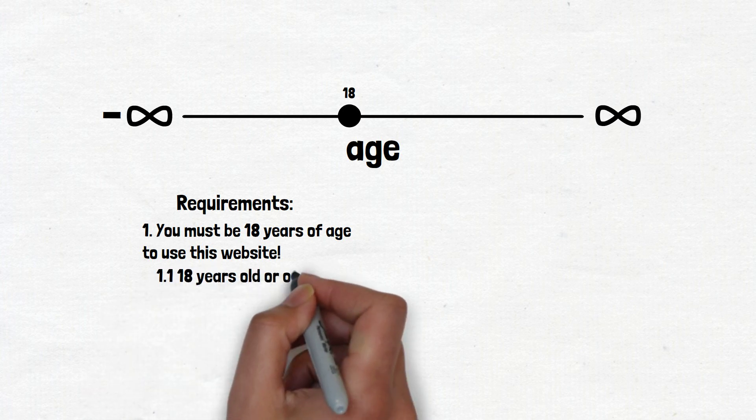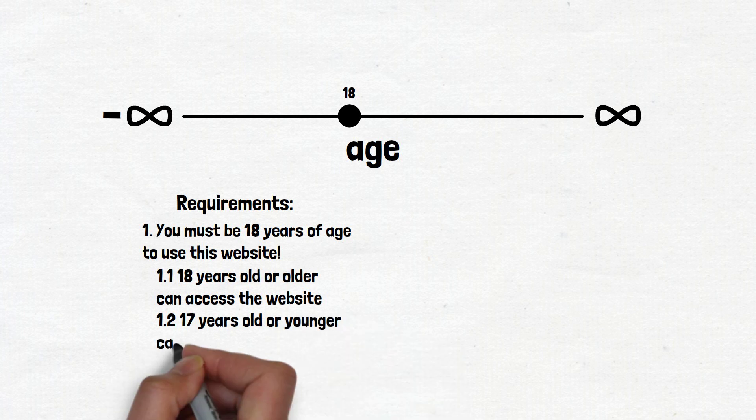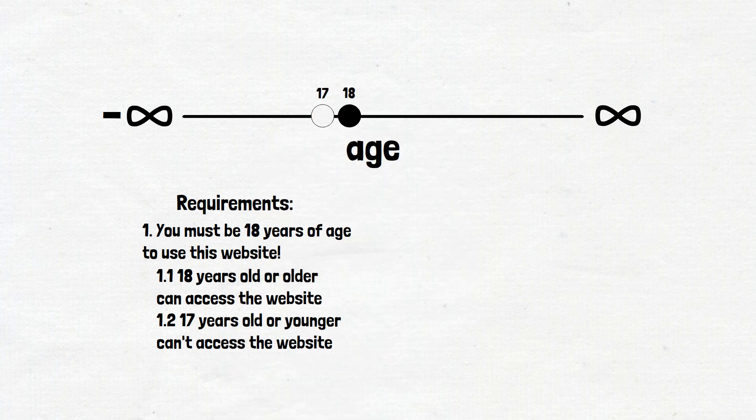18 years old or older can access the website. 17 years old or younger can't access the website. We can have a debate if we need to consider days as dots in our partitions. But for now, it is not critical and we will leave the years division only. Based on this, we can put two dots. 18 years old and 17 years old.